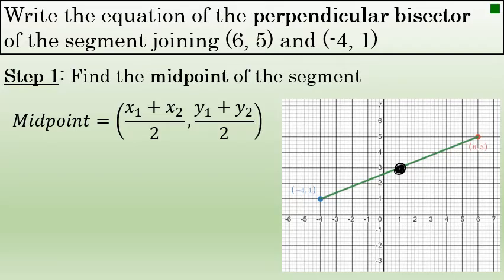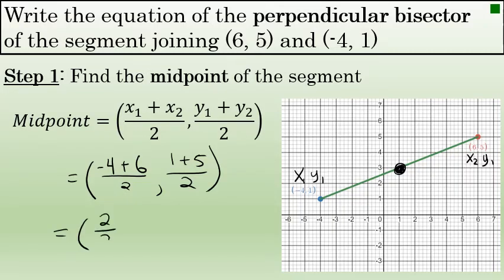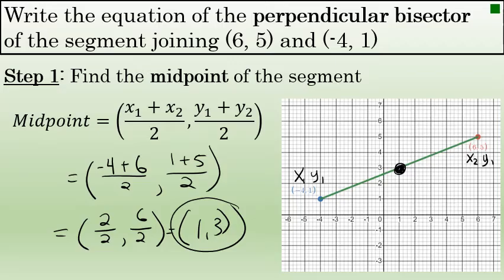The formula for the midpoint is (x1 plus x2) over 2, where x1 and x2 are the x-coordinates of the two points, and (y1 plus y2) over 2 is the y-coordinate of the midpoint. The two x-coordinates are negative 4 and 6, so x1 plus x2 is negative 4 plus 6 over 2. The y-coordinate comes from 1 plus 5 over 2. This gives 2 over 2 and 6 over 2, so the midpoint of this segment is exactly 1, 3. Because I have a graph here, we can verify that 1, 3 looks like the exact midpoint of this line segment, and it is.